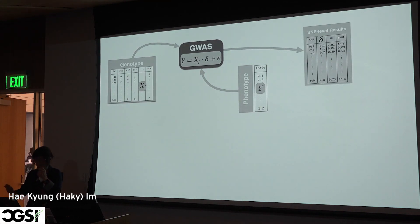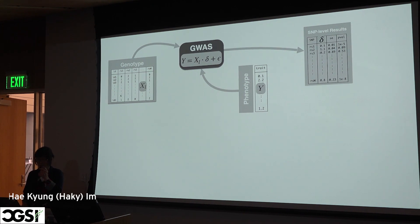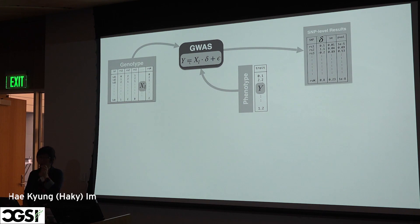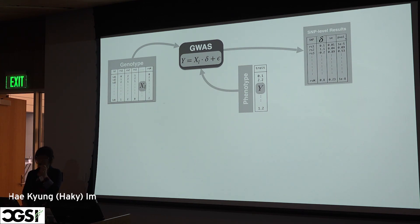As background to build some context: the components of a GWAS. In a GWAS you have a phenotype — this vector Y with N individuals — and a genotype matrix where rows are people and columns are SNPs. A GWAS is nothing more than a series of linear or logistic regressions where you regress Y on each column one at a time. That gives you a SNP-level results table with effect size — I like to call it delta, for delta disease — standard error, and p-value. Small p-values are your discoveries.